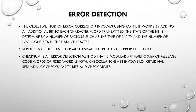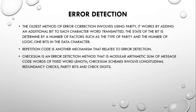The oldest method of error correction involves using parity. It works by adding an additional bit to each character or word transmitted. The state of that bit is determined by factors such as the type of parity and the number of logic-one bits in the data. Repetition code is another error detection mechanism. Checksum is an error detection method that uses the modular arithmetic sum of message code words of fixed word length. Checksum schemes involve redundancy checks, parity bits, and check digits.